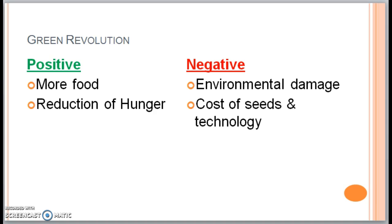Consider the pros and cons of the Green Revolution. The key benefit was the diffusion of higher-yielding seed varieties and the ability to grow more food — globally, grain production increased by 45% between 1945 and 1990. However, negatives include environmental damage, frequent worker exposure to chemicals, increased water demands straining water resources, and high costs. Local farmers in peripheral countries often struggled to purchase expensive Green Revolution seeds, driving them out of the market and causing economic ruin.